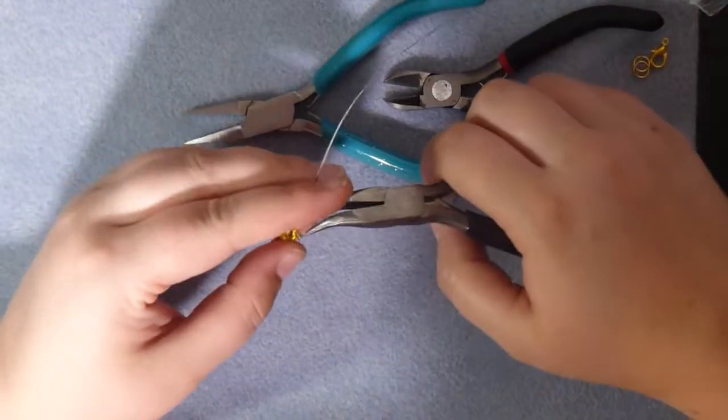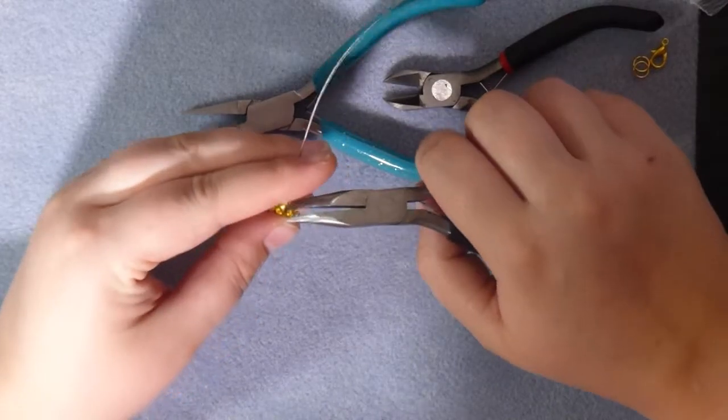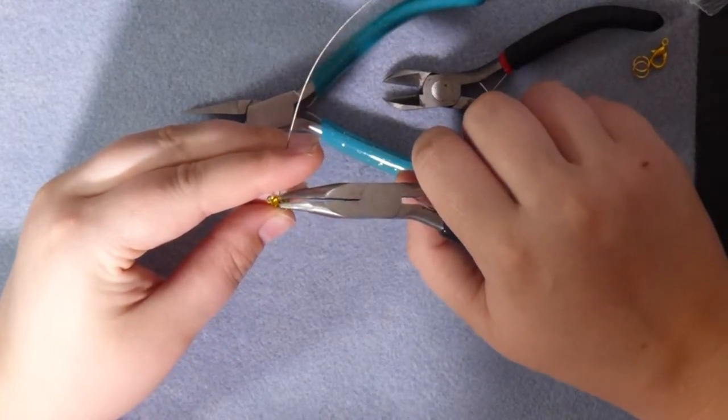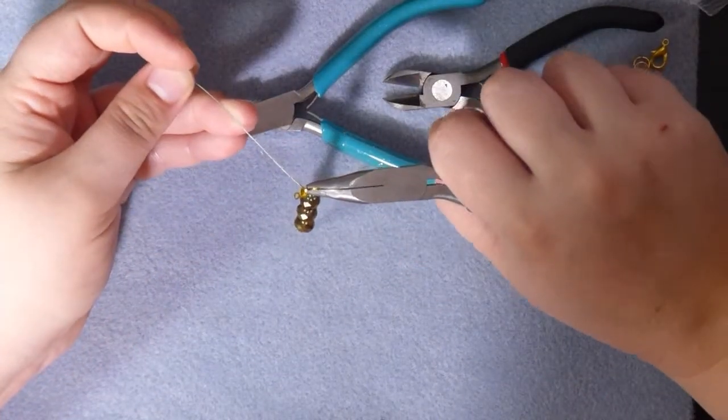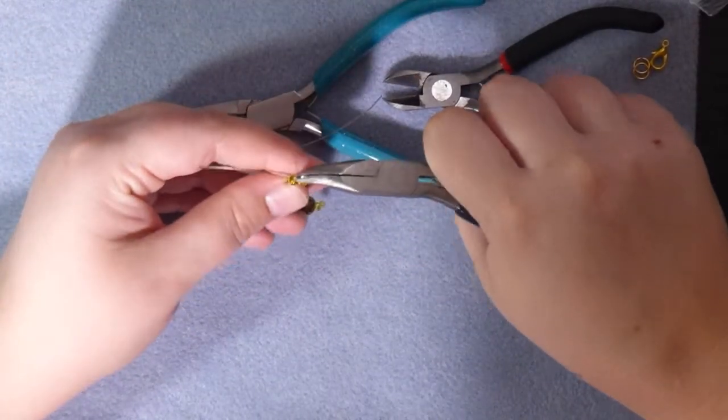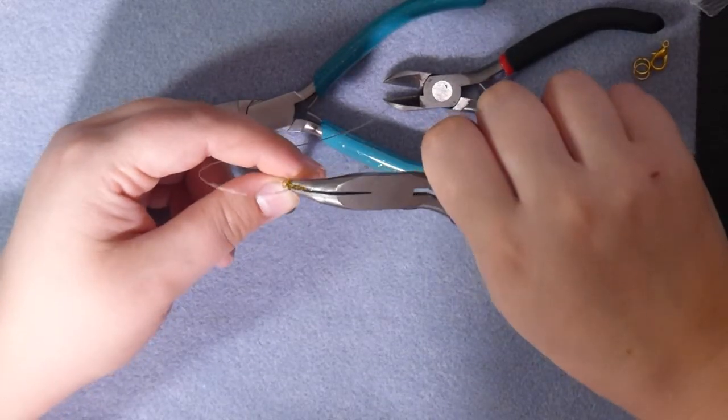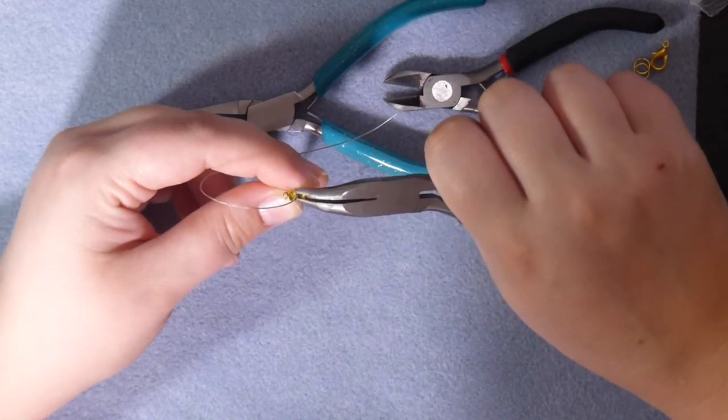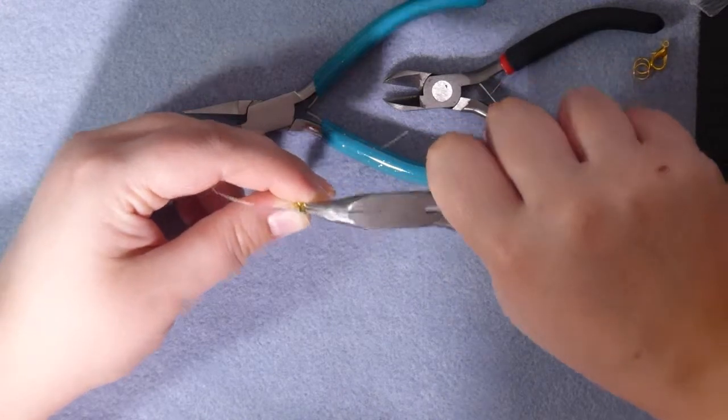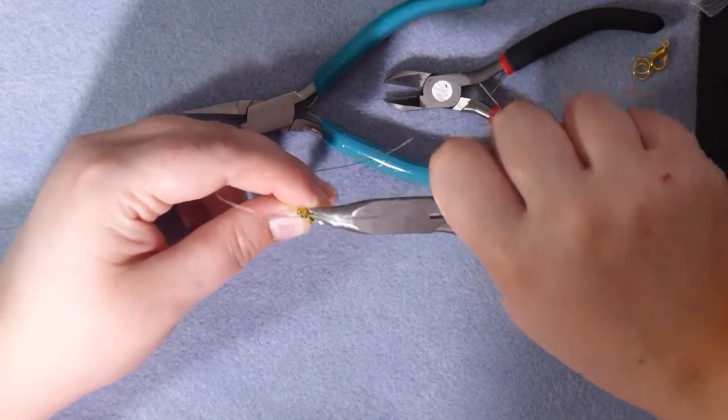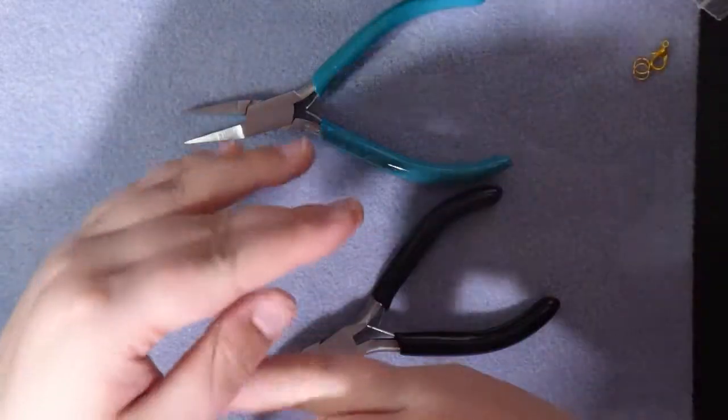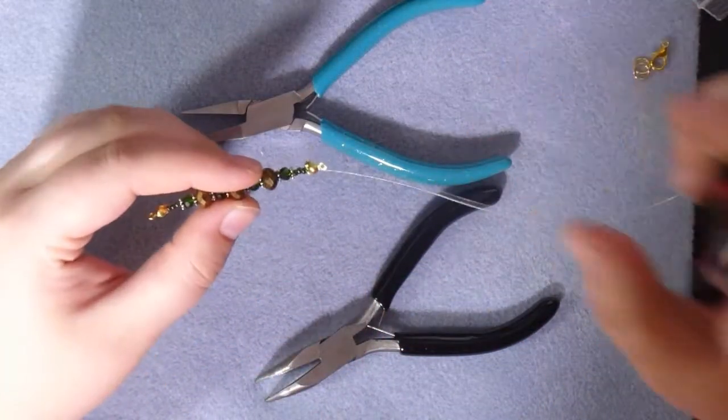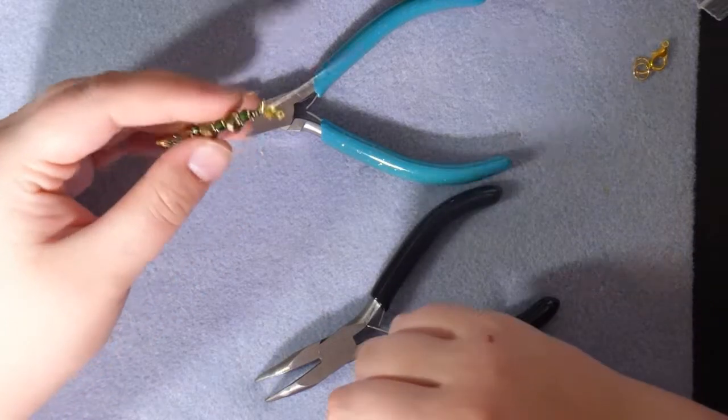So I take my pliers and gently just squash that bead again. Make sure you've secured it, because this little crimp bead here, whilst you might not see it and it's quite small, it's actually the thing that stops your jewelry from just being a pile of beads on the floor.